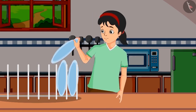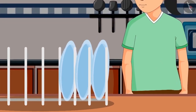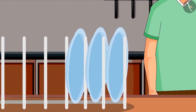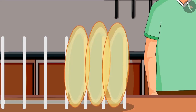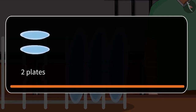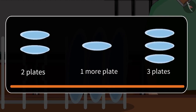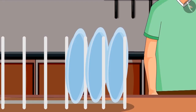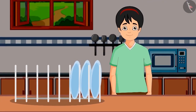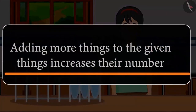She saw one more plate and thought of setting that too on the shelf. There were two plates already. After setting one more plate, how many plates are there? That's right — two plates and one more plate is three plates, which means in total there are now three plates on the shelf. So friends, you saw that adding more things to the given things increases their number.